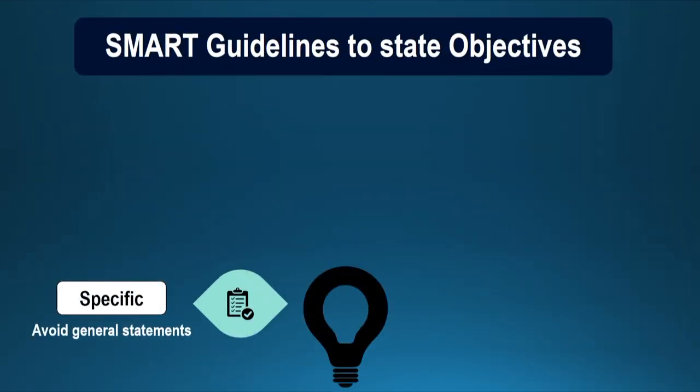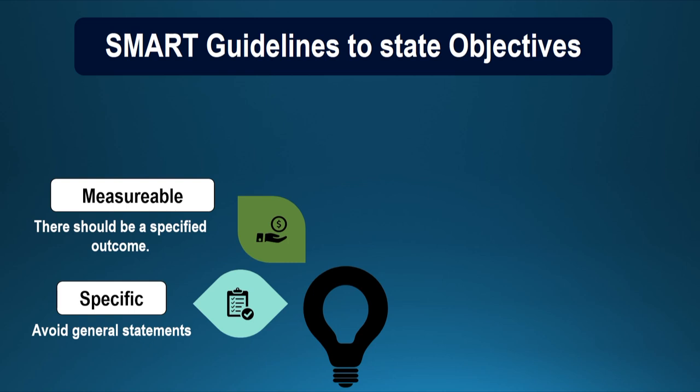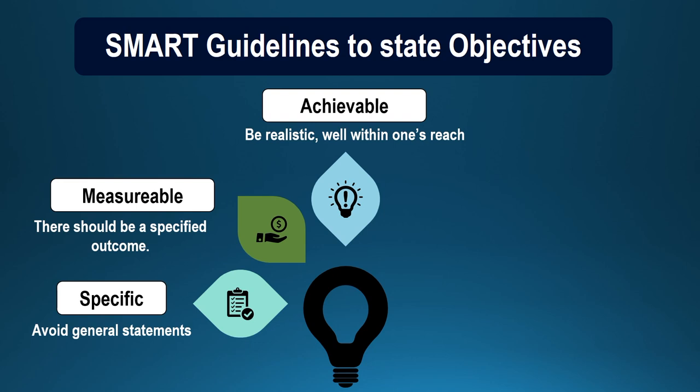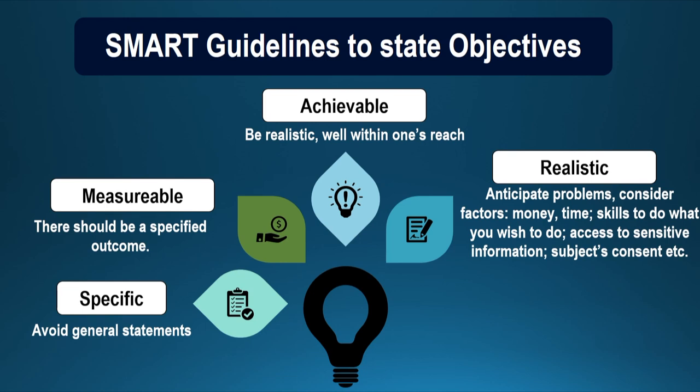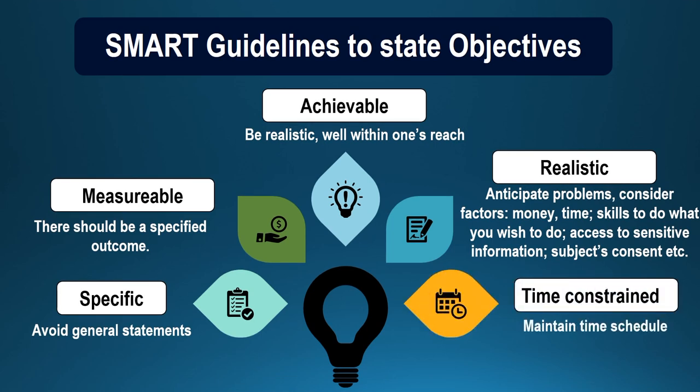For stating the objectives, you need to know the SMART guidelines. The objective should be stated very specifically using action verbs — try to avoid general statements. The objective should be measurable, so there should be a specified outcome. It should be achievable — that is, be realistic and well within one's reach. It should be realistic — you can anticipate the problems, consider various factors such as money, time, skills, and whether you have access to sensitive information. And the last one is the time constraint — try to maintain the time schedule.